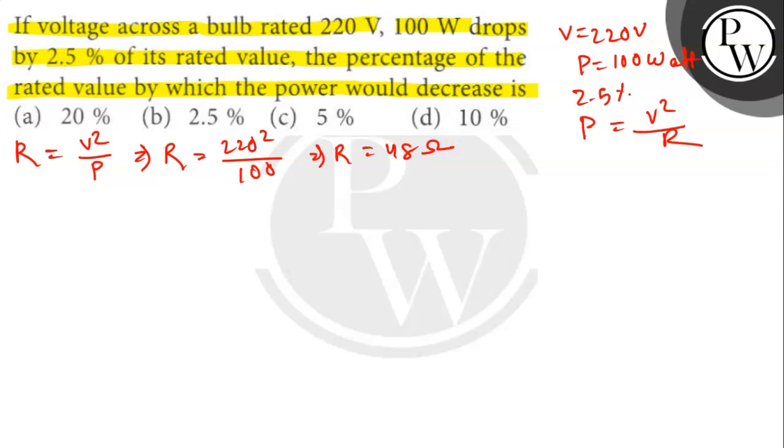As per the given condition, the voltage drops by 2.5% of its rated value, then the new voltage will be V new equals 220 minus 2.5 into 220 divided by 100. The answer will be 220 minus 5.5, that will be 214.5 V.